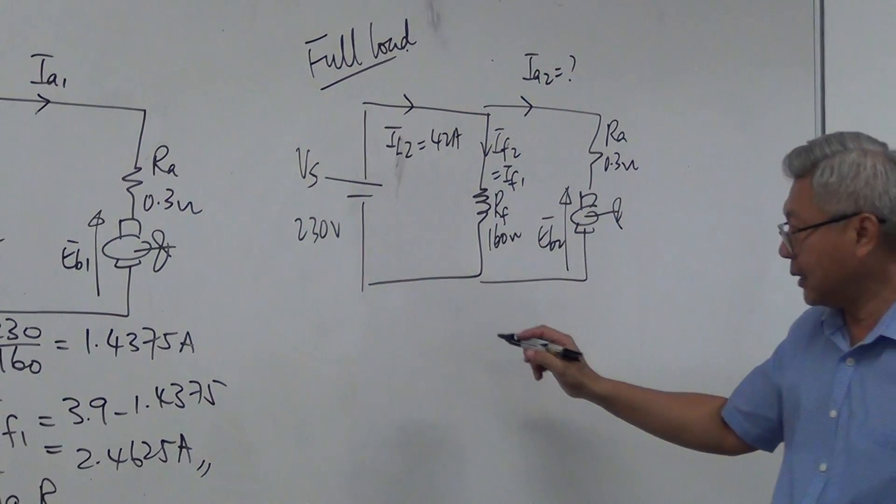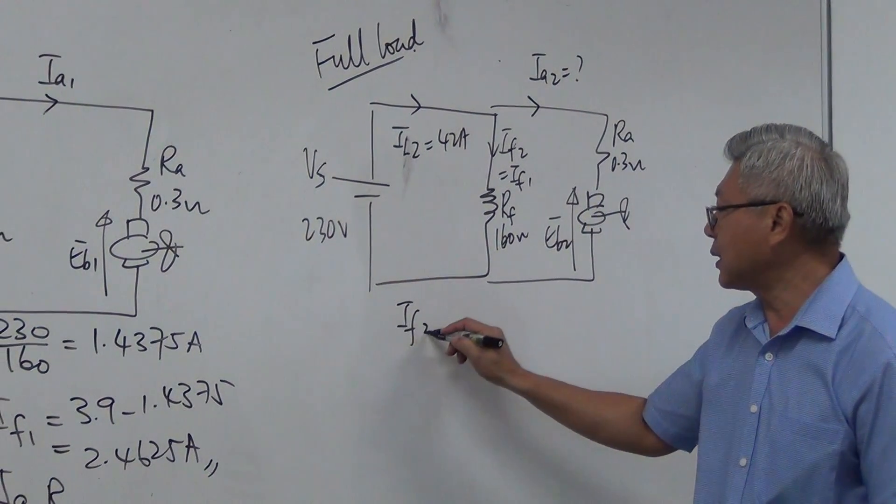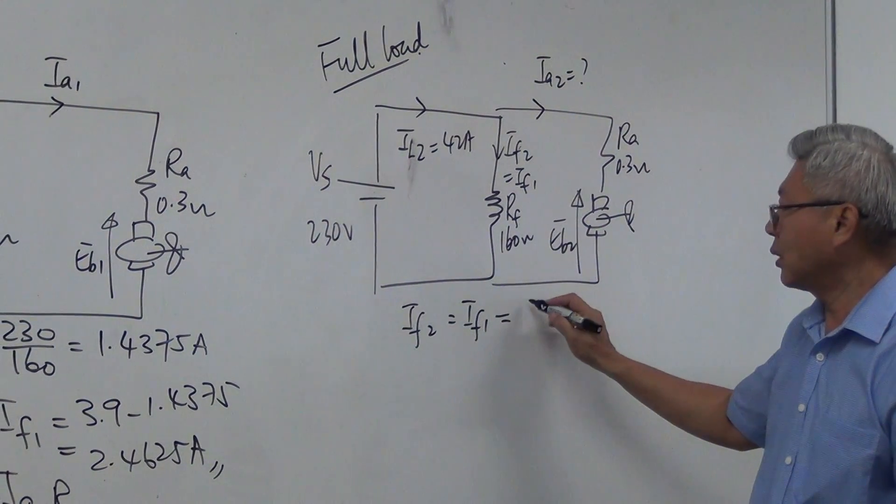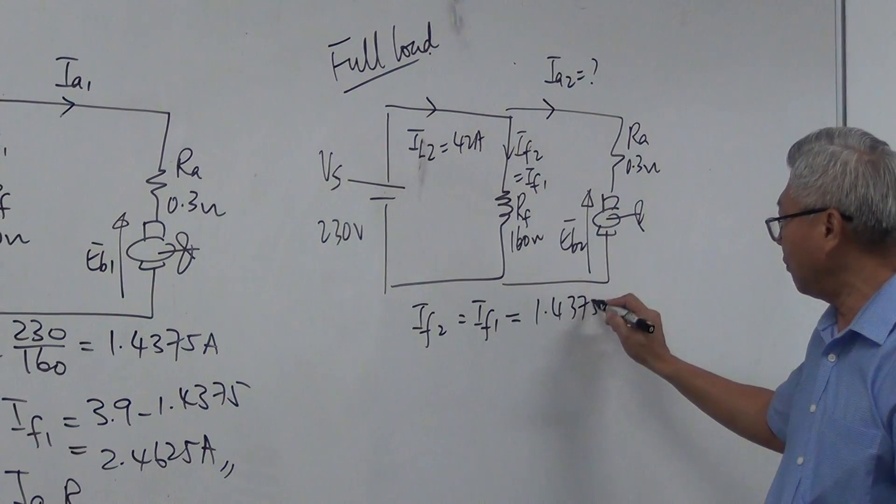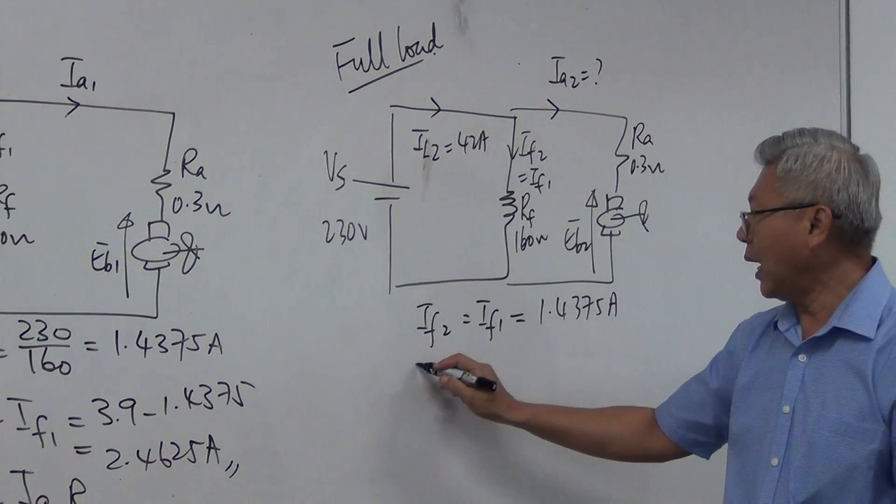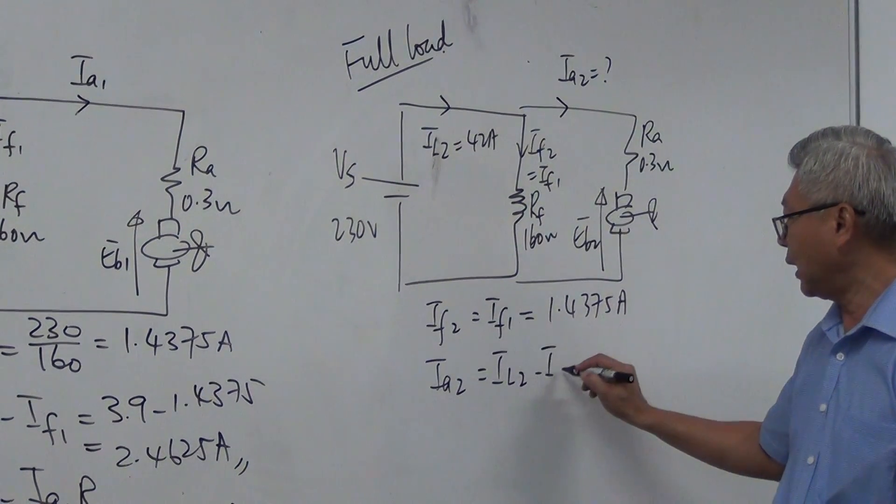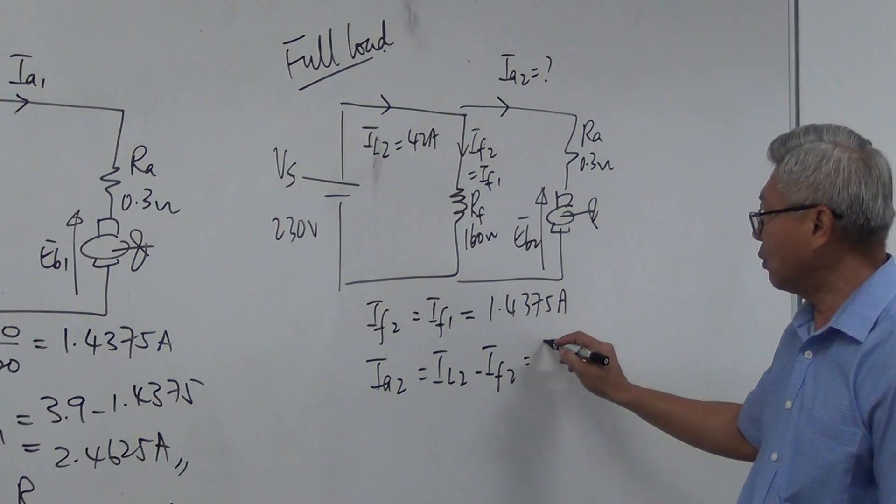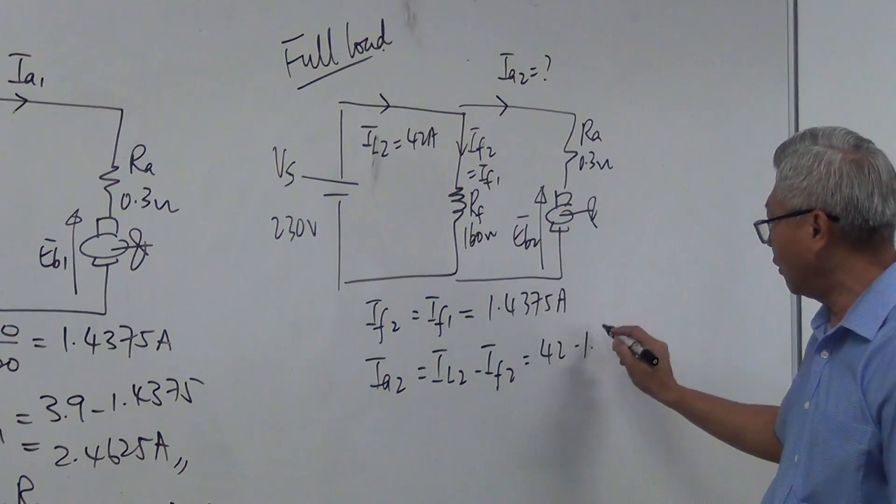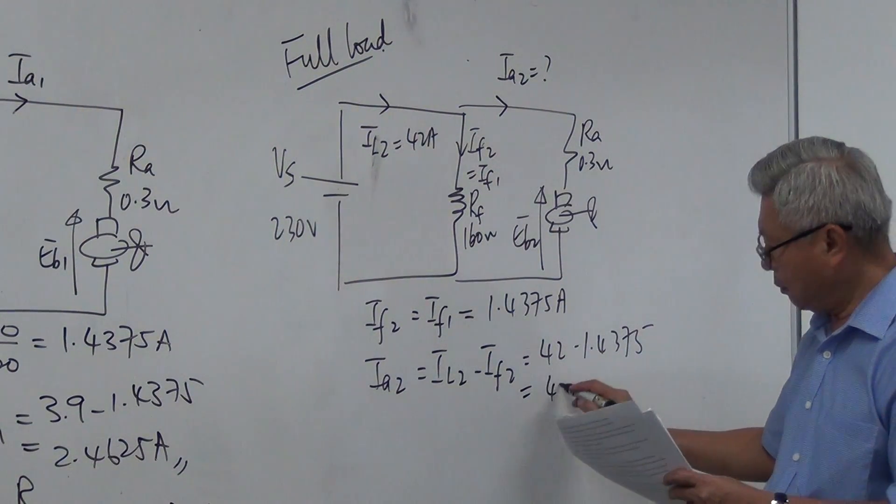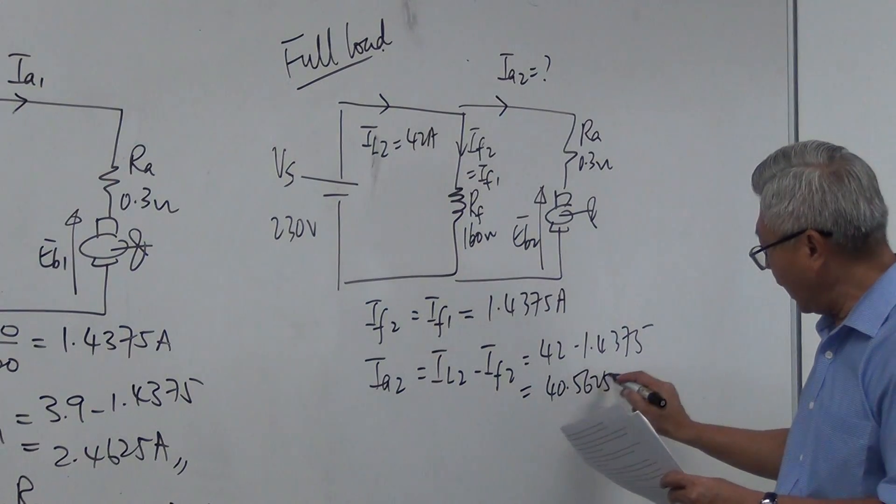Let's do our mathematics. IF2 is the same as IF1. It's the same as IF1. So that's 1.4375 ampere. And Ia2 is now equal to IL2 minus IF2. So that is equal to 42 minus 1.4375. And I get 40.5625 ampere.